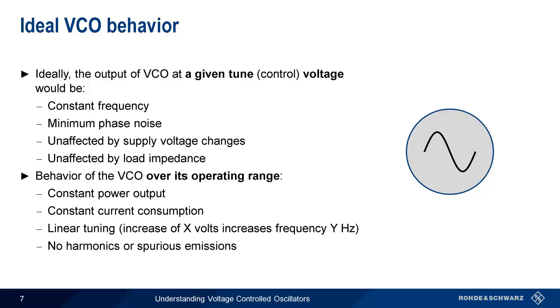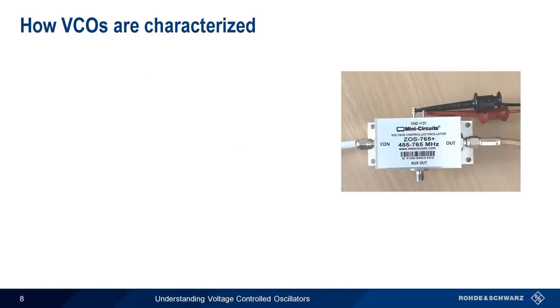All of these parameters, or deviations from ideal behavior, are part of VCO characterization. Now that we understand what VCOs are and why characterization is important, let's talk about how VCOs are characterized.